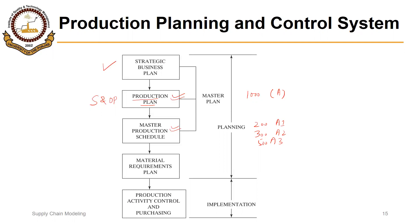This MPS further drives the material requirements plan, which is the plan for sub-components and materials required to make the different product types in the MPS. Finally, we reach the implementation phase where actual production takes place, called production activity control for components made within the factory, and purchasing for components or raw materials that must be sourced externally.